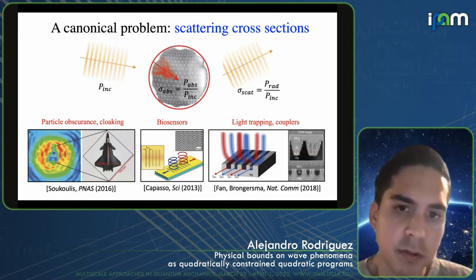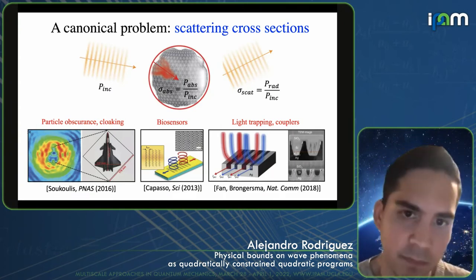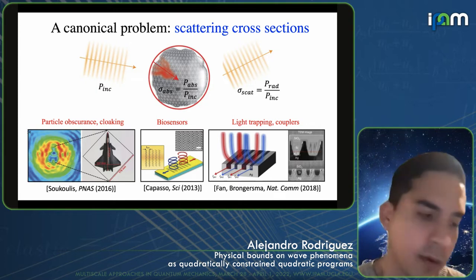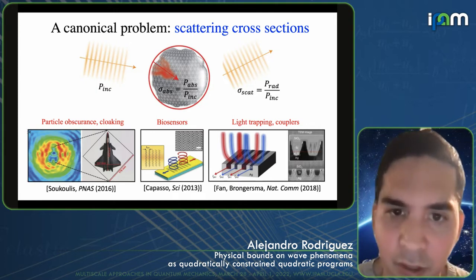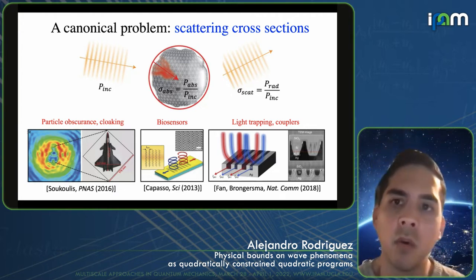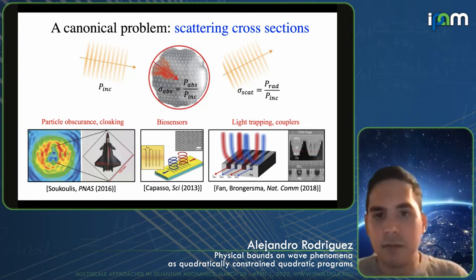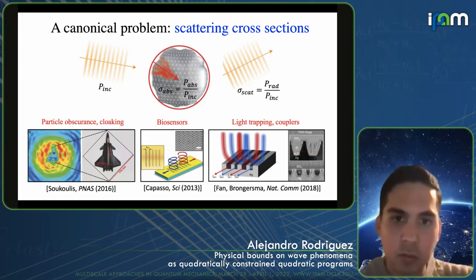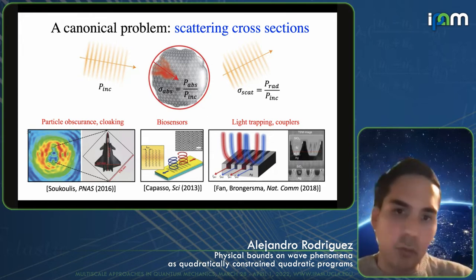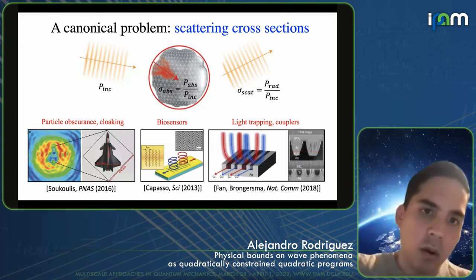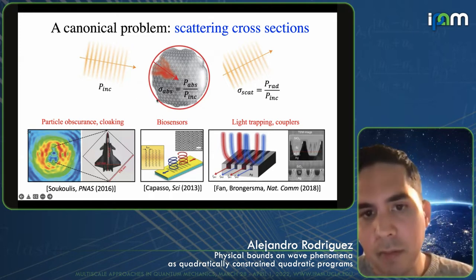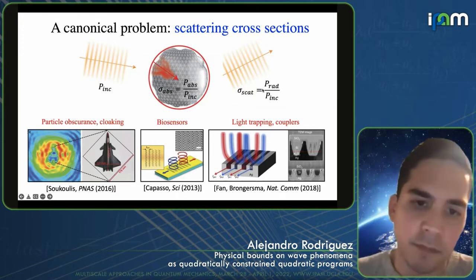I'm going to pick on a few problems to convey what's behind these limits. A canonical problem that every student taking quantum mechanics will know about is scattering cross-section. The question of maximizing scattering cross-section is simple: I have a region with some potential or structure, and I want to maximize either the absorbed power or the scattered power from some incident wave. The absorption cross-section or scattering cross-section is an important figure of merit.